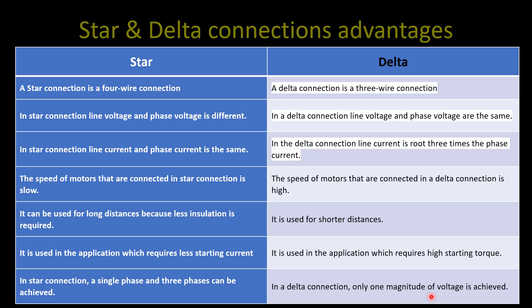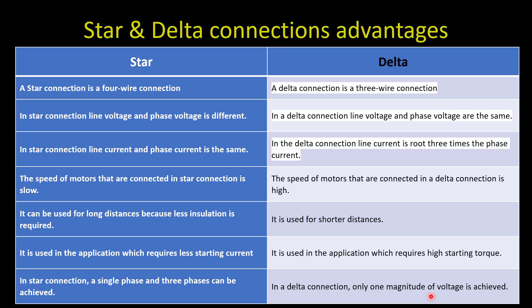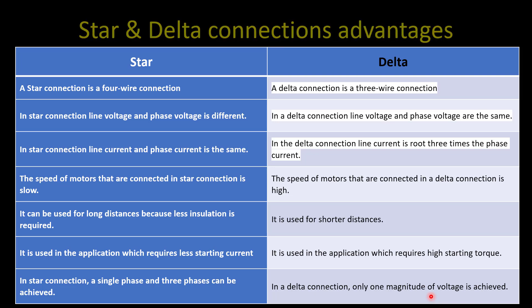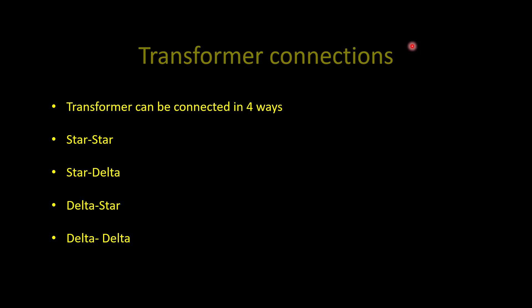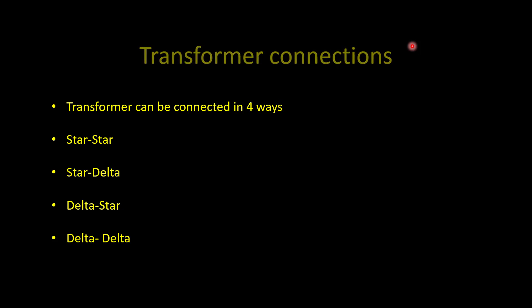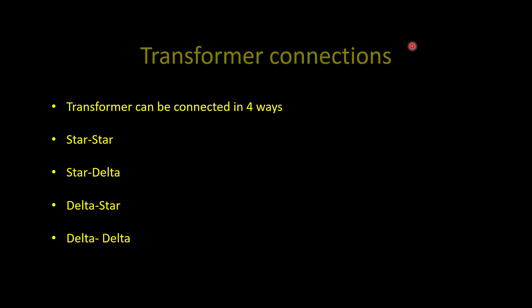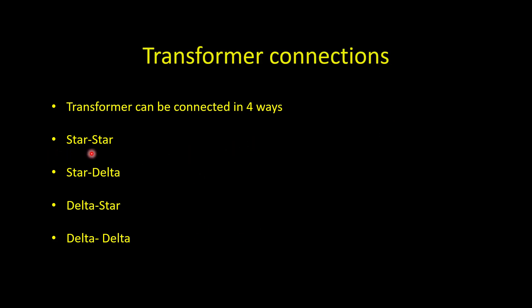We know a transformer has two windings — primary and secondary — and each winding can be connected in two ways: either star or delta. With two windings and two configurations, there are four possible ways of connecting transformer windings: primary star secondary star, primary star secondary delta, primary delta secondary star, and primary delta secondary delta.